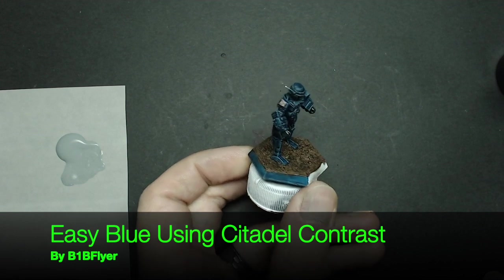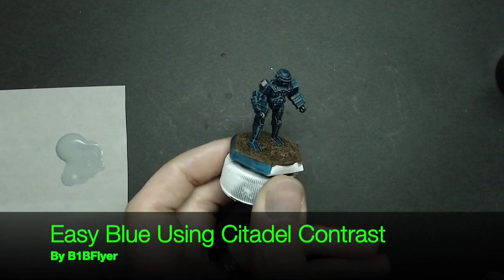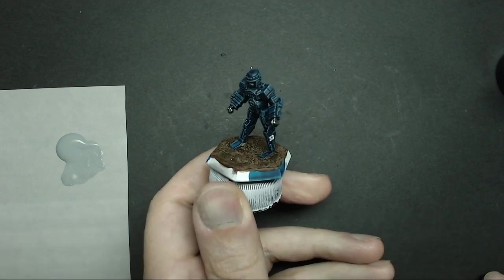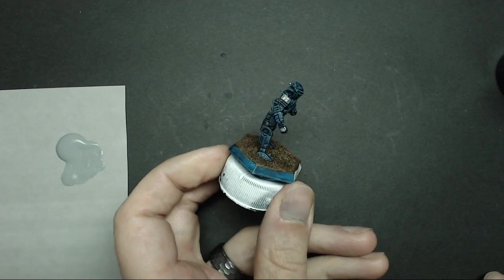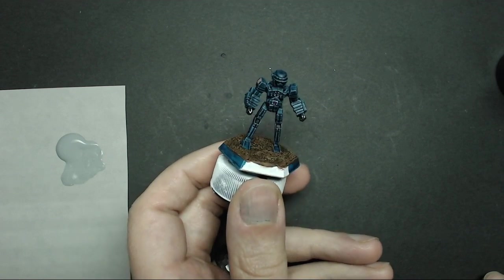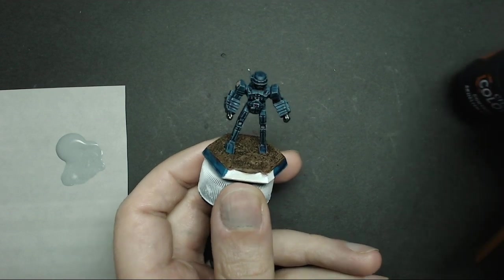Hey everyone, BOMB Flyer here. This is the example of what we're going to achieve today using Citadel Contrast Paints. Particularly we're going to use blue in order to get this blue-gray effect on this Donegal Guards Commando.